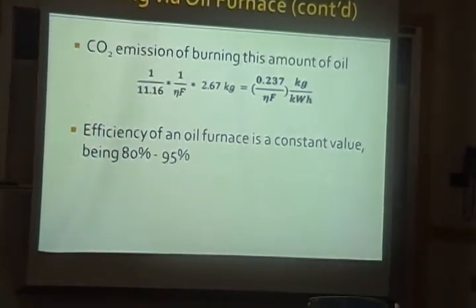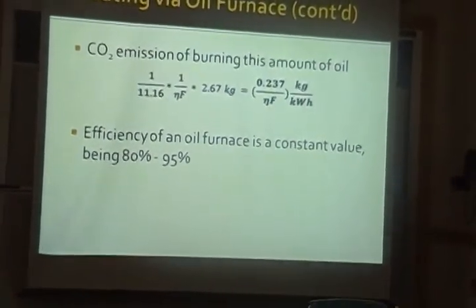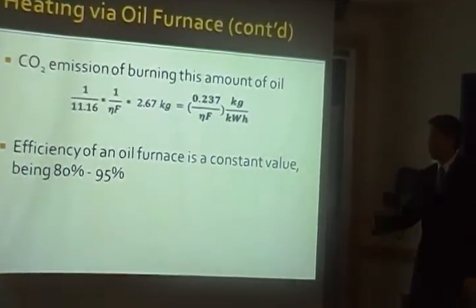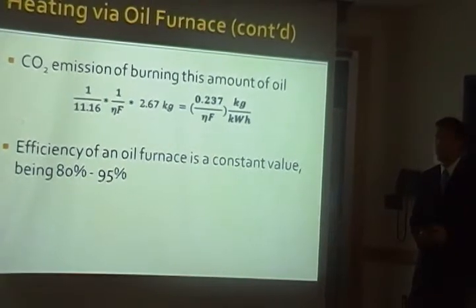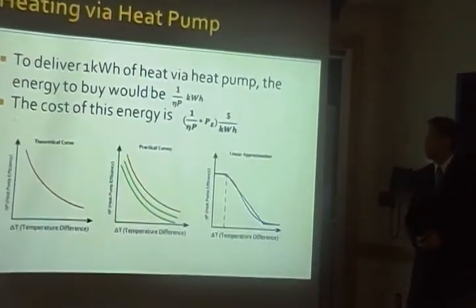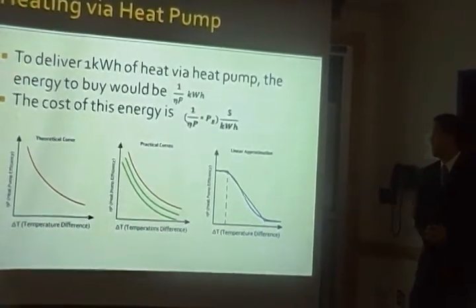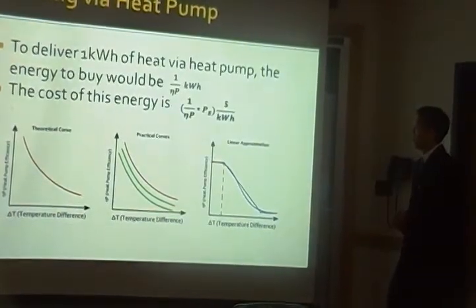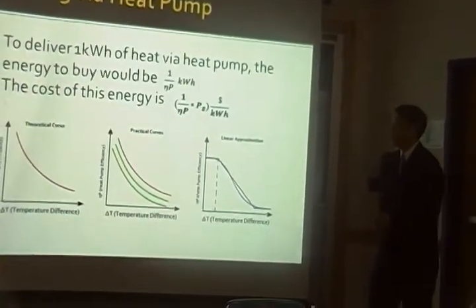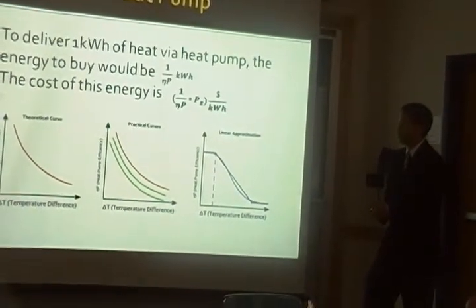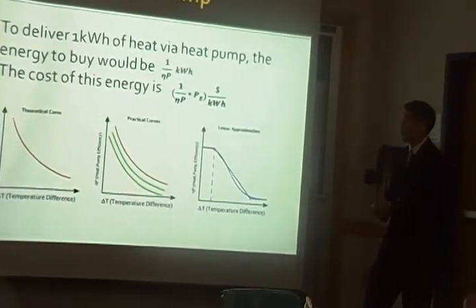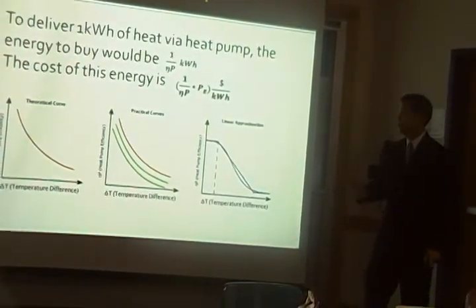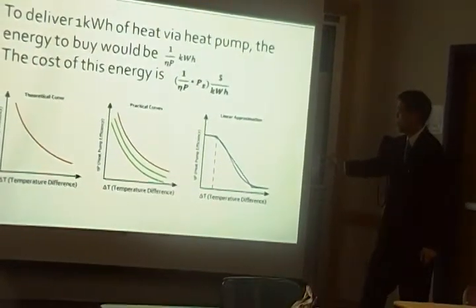We also determined the carbon dioxide produced from burning that amount of oil using a standard equation. The efficiency of an oil furnace is a constant that varies from furnace to furnace, ranging from 80% to 95%; for our system we used 85%. For the heat pump, the energy to buy per kilowatt-hour of heat delivered is also the inverse of the pump efficiency, and the cost is the unit price multiplied by that. The heat pump efficiency follows a theoretical curve showing that as temperature difference increases, efficiency decreases. We took an average of practical curves from real heat pump machinery and applied a linear approximation for our algorithm.